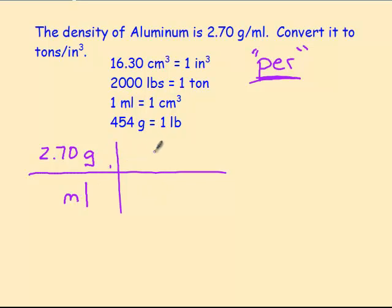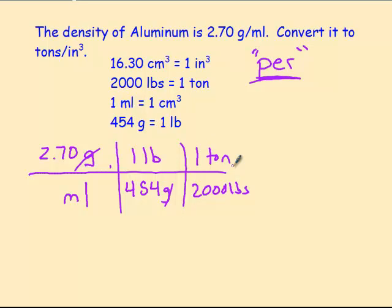So let's look at our conversion factors given here. So we have 454 grams in one pound, and that cancels grams. So now I have pounds per milliliter. 2,000 pounds in one ton. Pounds is gone. I got tons on the top. It's what I want.